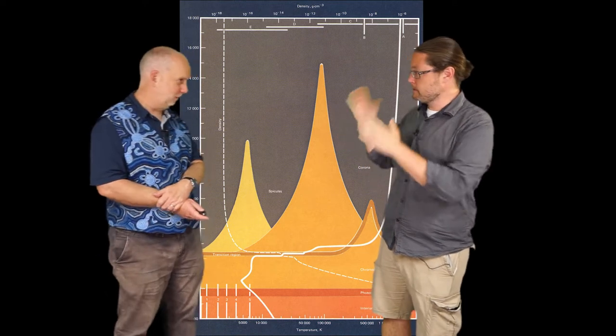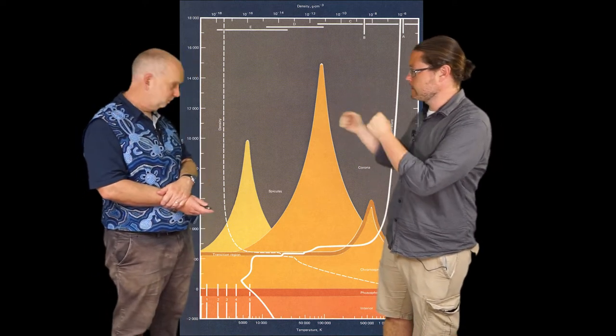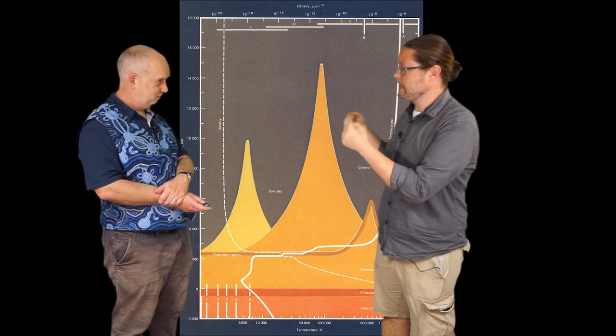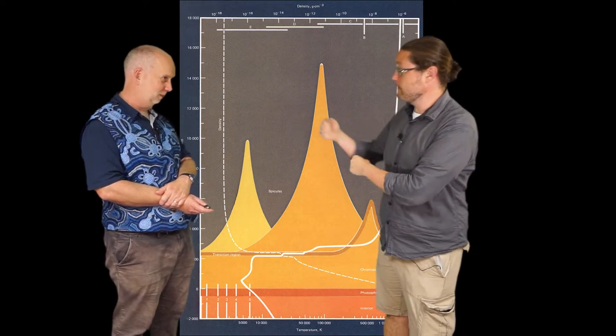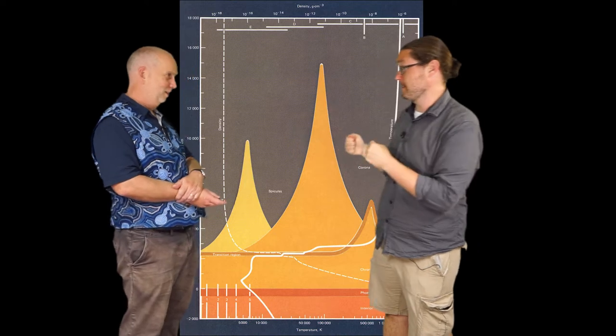Alright Paul, so we kind of know there's these magnetic fields and because there's differential rotation of the Sun it causes them to move in this 11, well actually 22 year cycle related to the magnetic field.